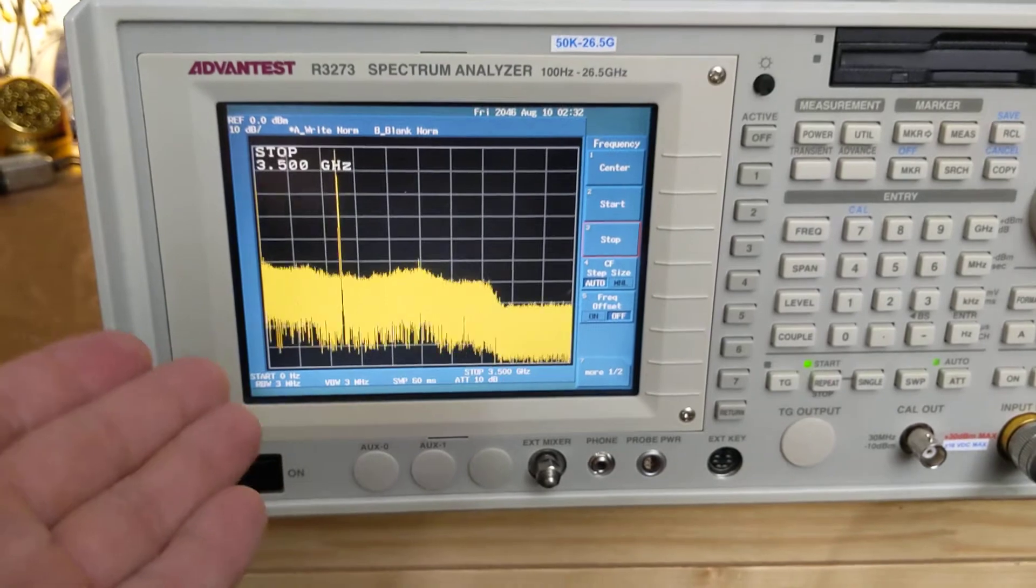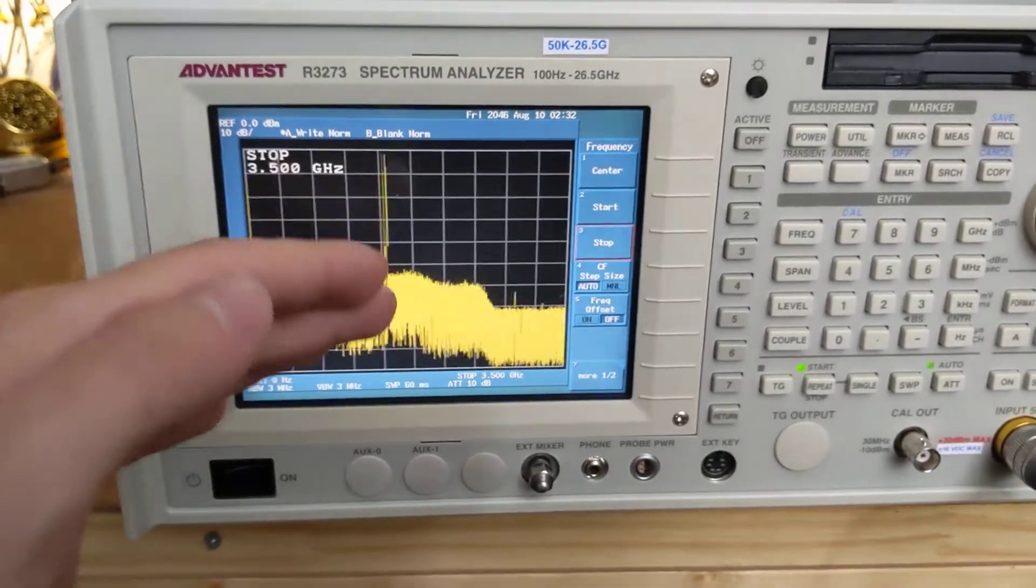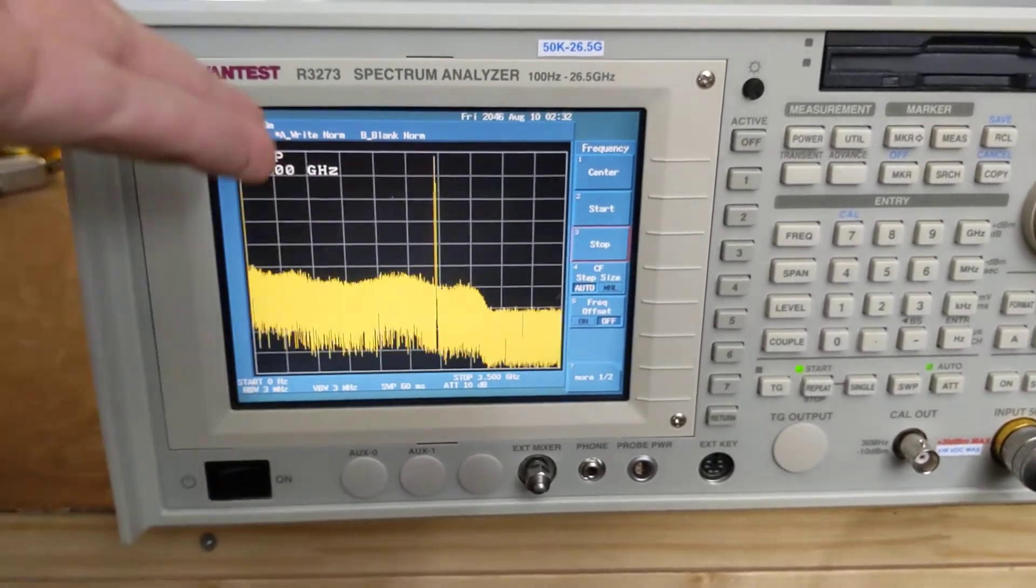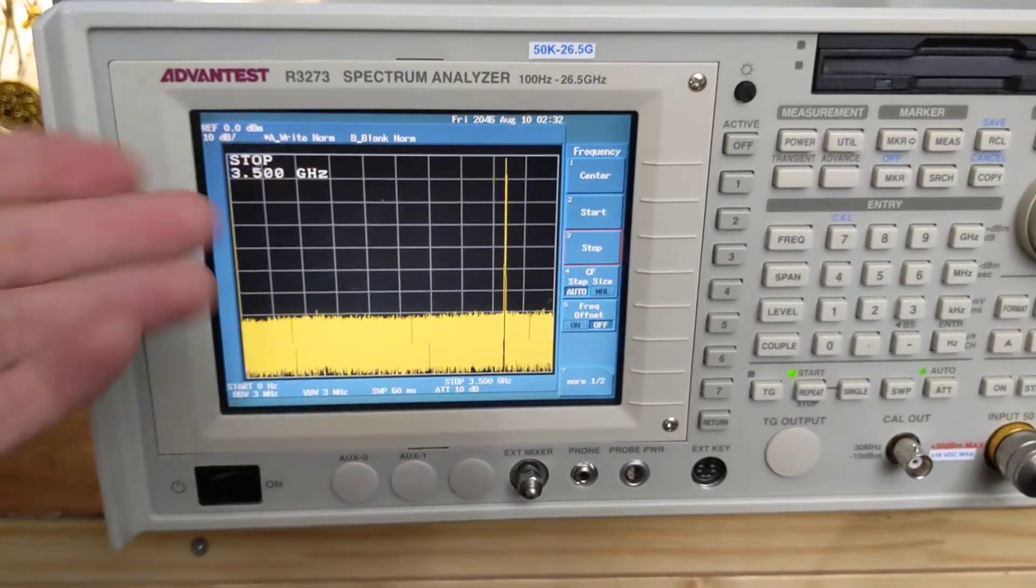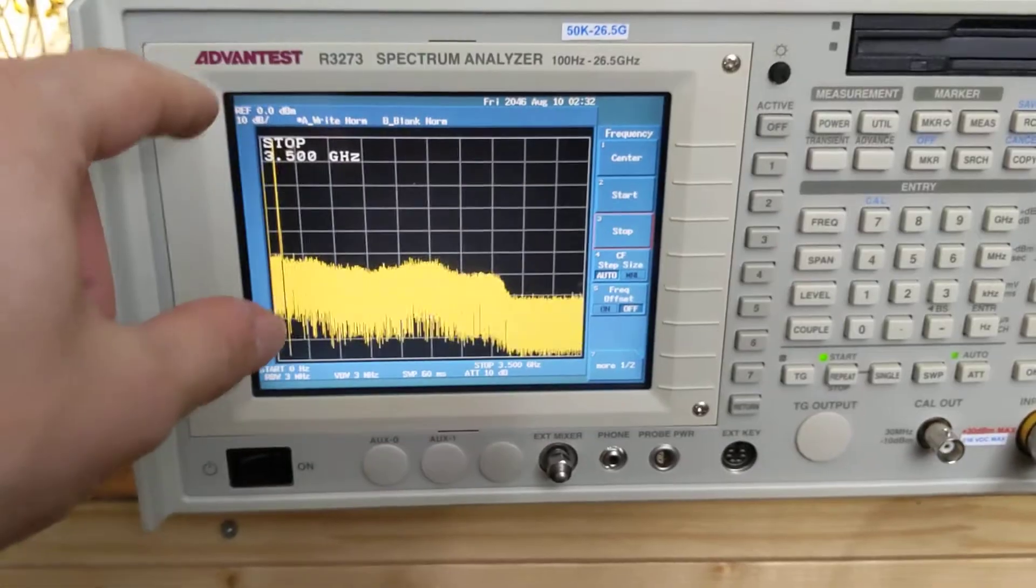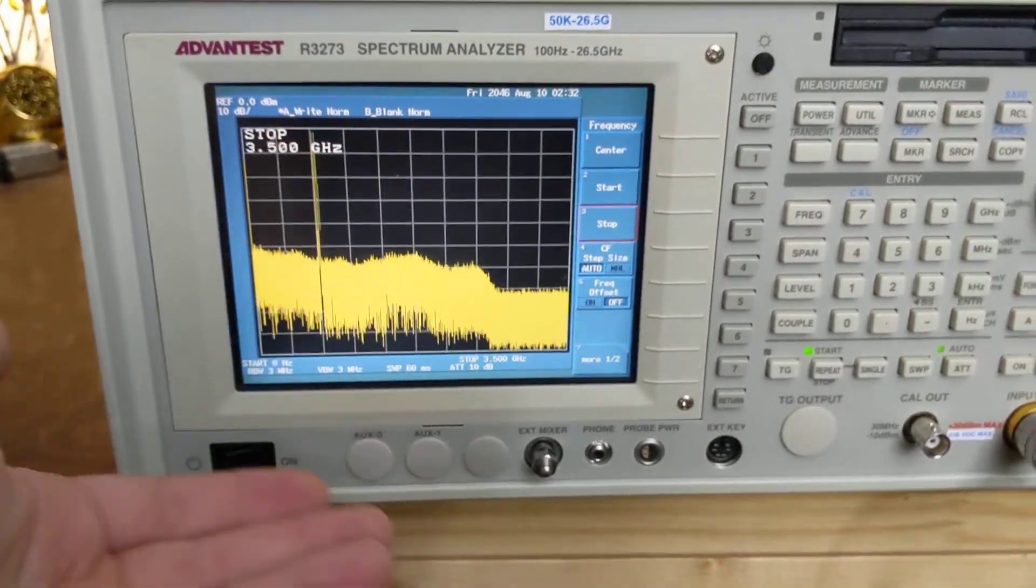In this case, the mixer they used to down convert it is complete and utter garbage. It's very lossy, and so they have to amplify the signal back up to level it in the low band. Of course, you can't just amplify a signal, you have to amplify the noise too. So that raises the noise floor in the low band.